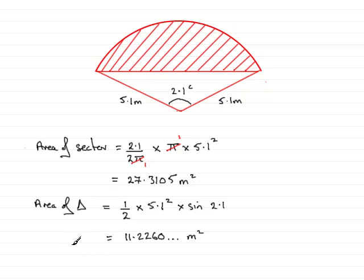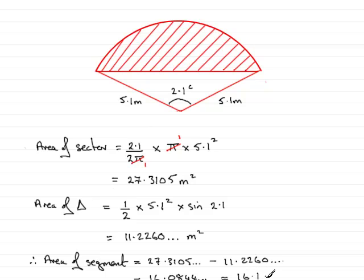All that leaves us to do now is to find the area of the segment. The area of the segment equals the area of the sector, 27.3105, subtract the area of the triangle, 11.2260. If we do that, we get 16.0844 and so on, which equals 16.1 meter squares rounded to one decimal place.